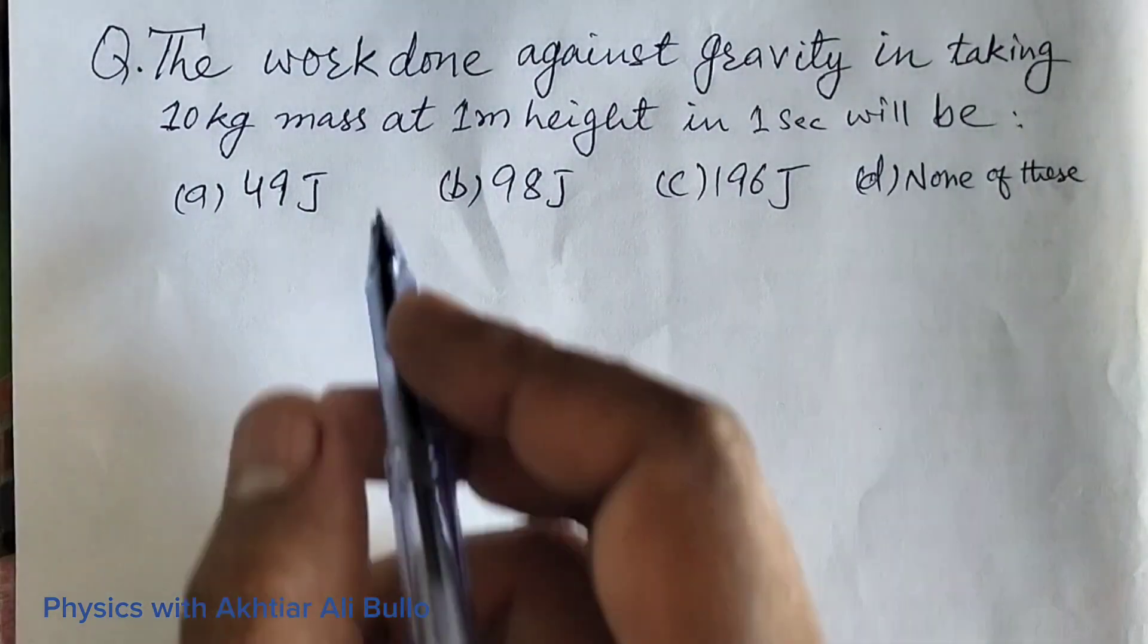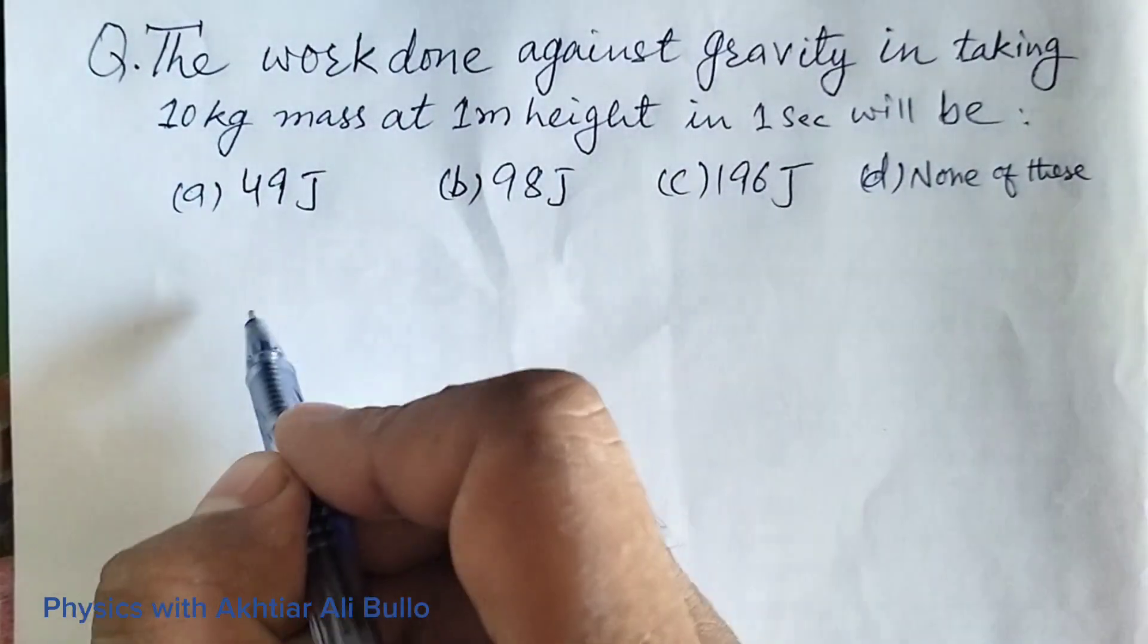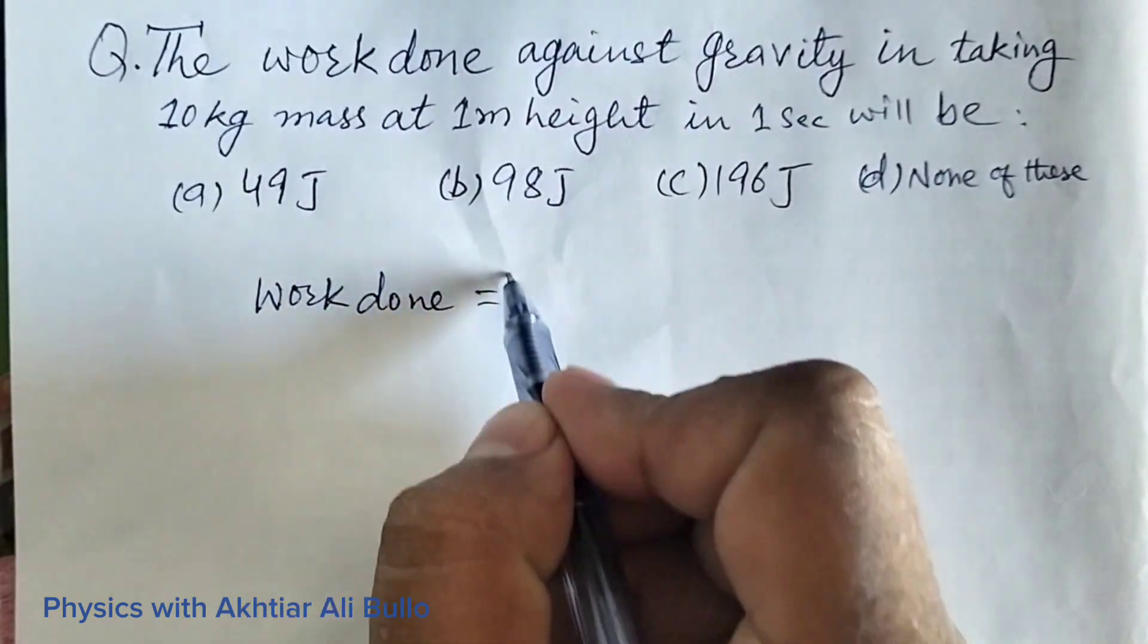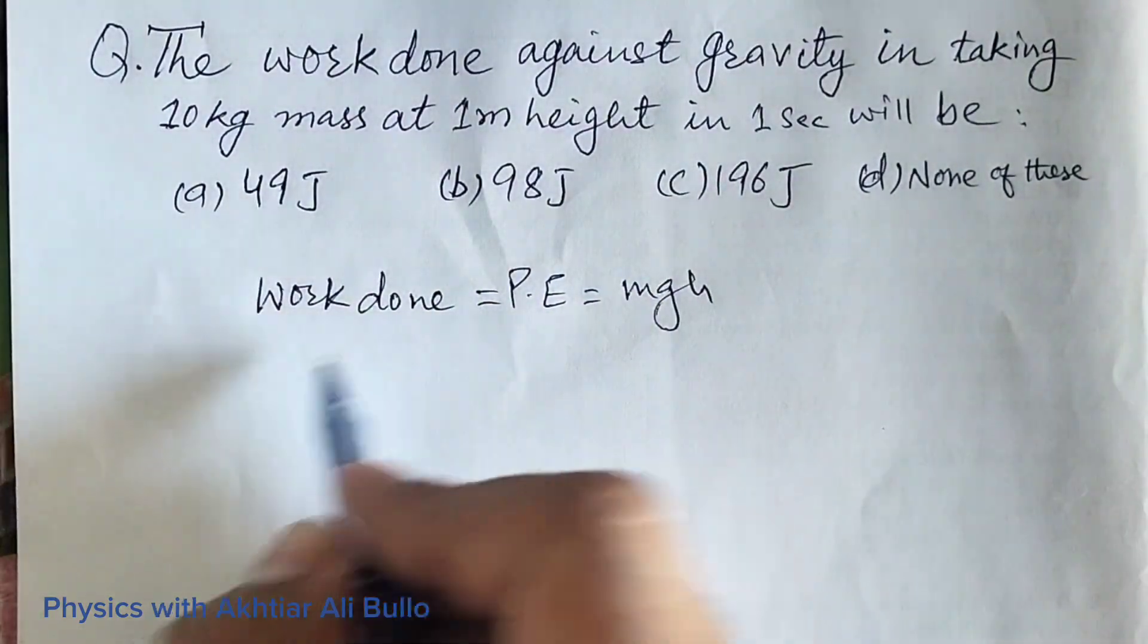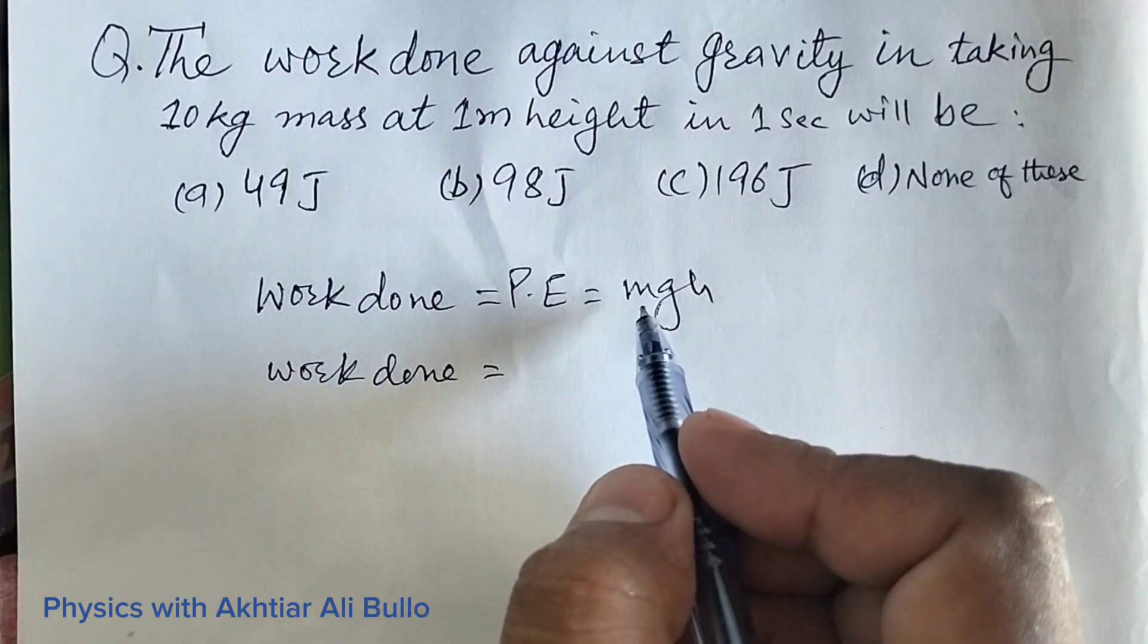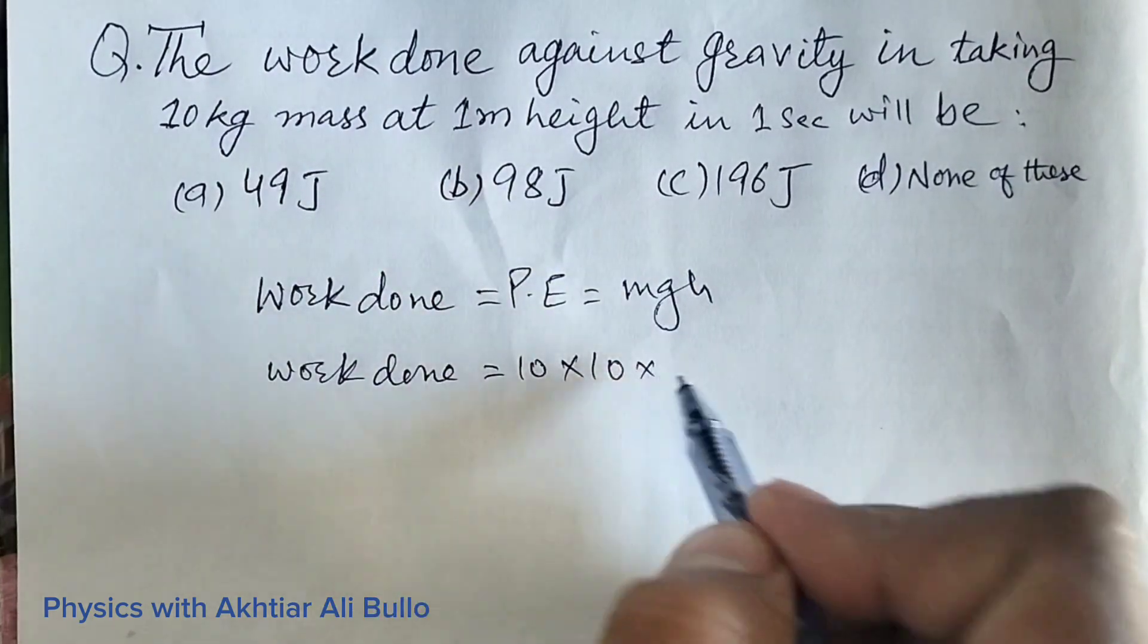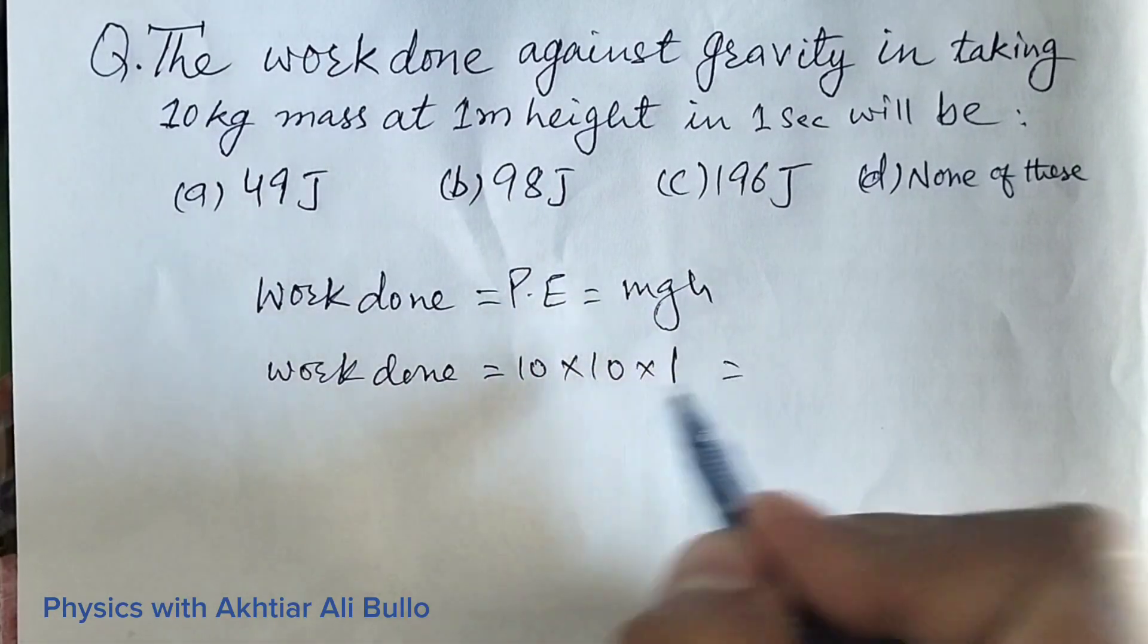In this condition, work done is calculated in the form of potential energy, means work done equals PE equals mgh. So work done will be: mass is 10 kg into the value of g is 10 and height is 1 meter, so we will get 10 into 10, equals 100 Joule.